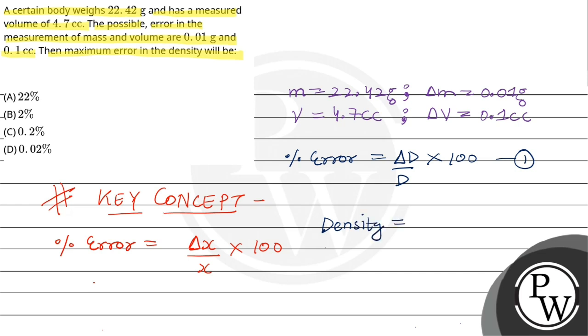Density equals mass per unit volume, so D equals m by v. Now we can differentiate it. Log D equals log m by v. Using the property log a by b equals log a minus log b, we get log D equals log m minus log v.